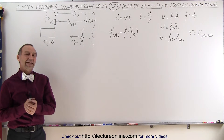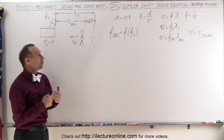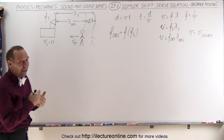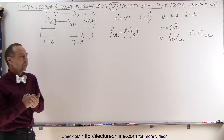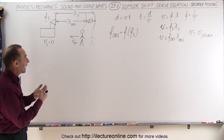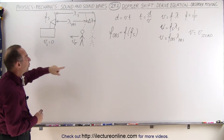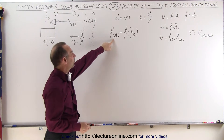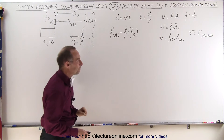Welcome to Electron Line. In this video, we're going to turn things around — we're going to have the observer moving towards the source, and we're trying to find the equation relating the observed frequency to the source frequency.